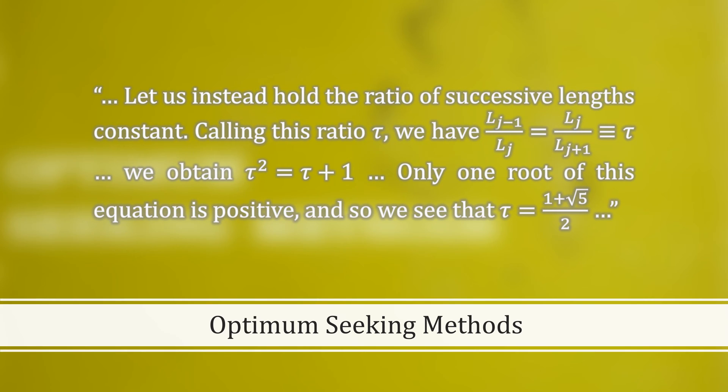He goes on to say, let us instead hold the ratio of successive lengths constant. Calling this ratio tau, we have this equation. We obtain tau squared is equal to tau plus 1. Only one root of this equation is positive, and so we see that tau is equal to 1 plus the square root of 5 over 2.